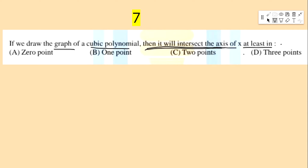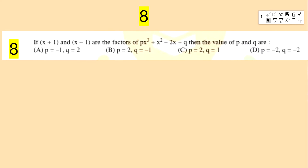Next bit: if we draw the graph of a cubic polynomial, then it will intersect the x-axis at least — options: 0 points, 1 point, 2 points, 3 points.